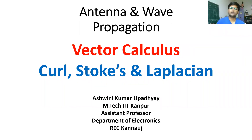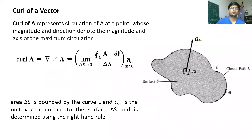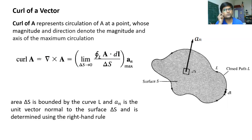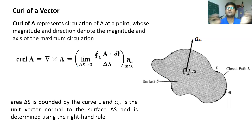In this lecture we are going to talk about curl, Stokes theorem, and Laplacian. For any given vector which is rotating in nature, the curl of that vector represents the rotation of that vector around a particular point. In standard definition, curl of A represents the circulation of A at any point, whose magnitude and direction denote the magnitude and axis of the maximum circulation around that point.